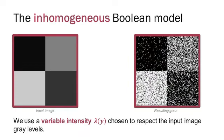Since we wish to represent a complete image, we use a variable intensity, lambda, which is chosen to respect the local image grey level. This variable intensity defines an inhomogeneous Boolean model.